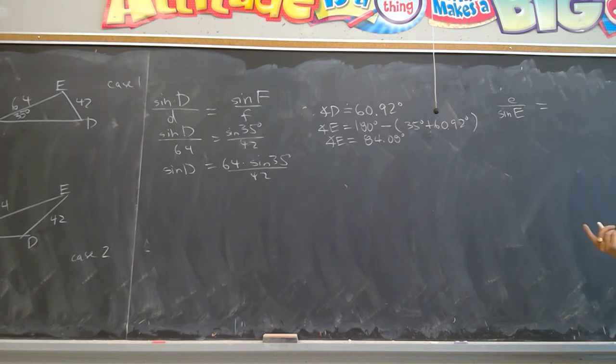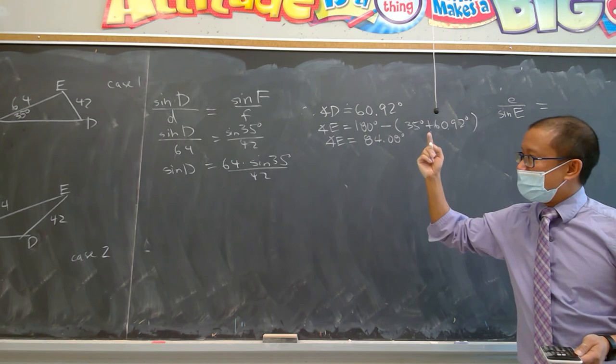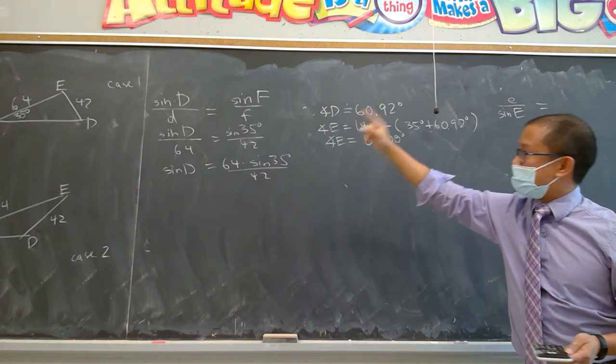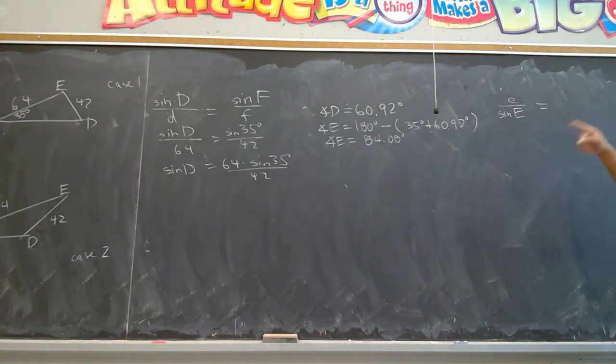And some students would argue, well, which one does it matter to use? Should we use D over sine D? Well, I like using what's provided, that ratio. In this case, F over sine F. Because those are the values that are given to me. Right?